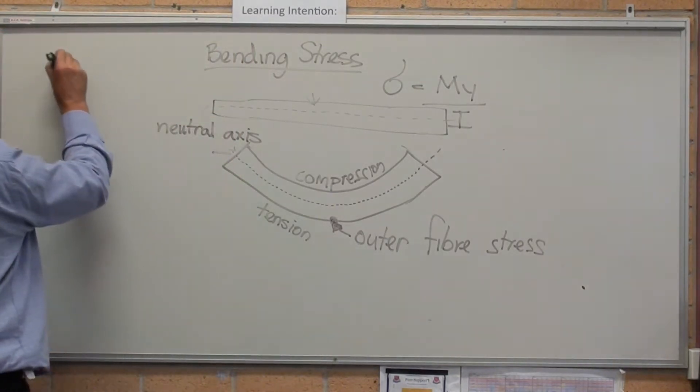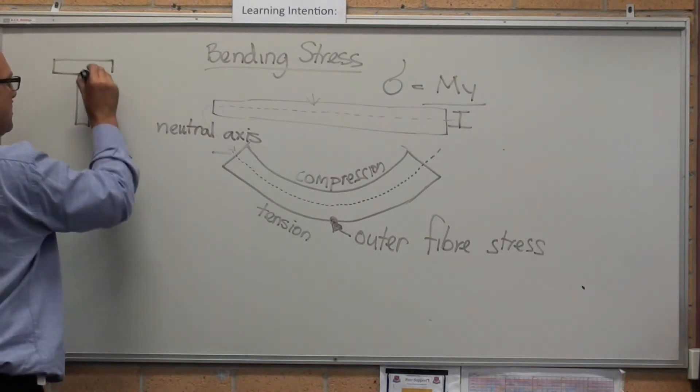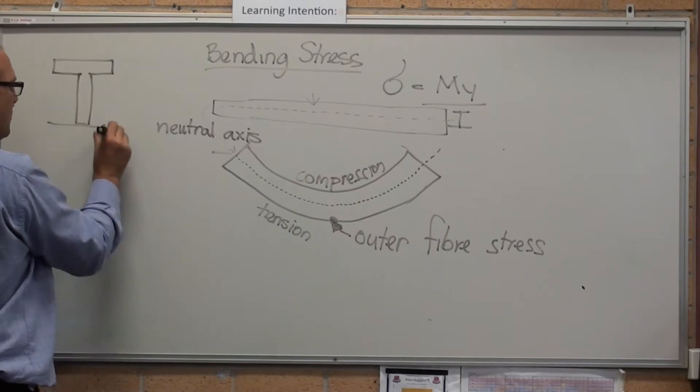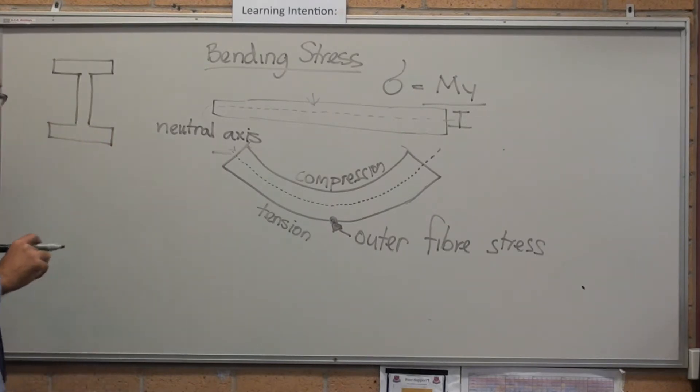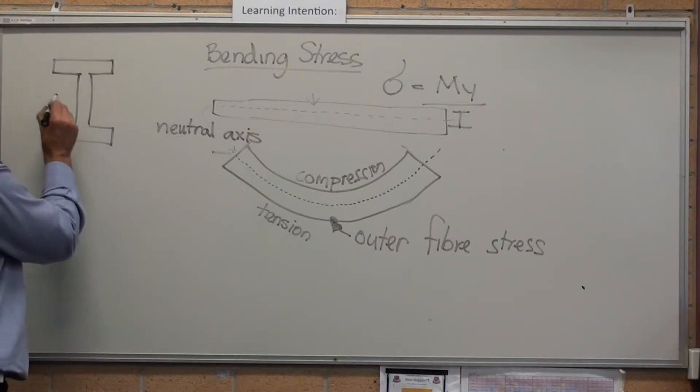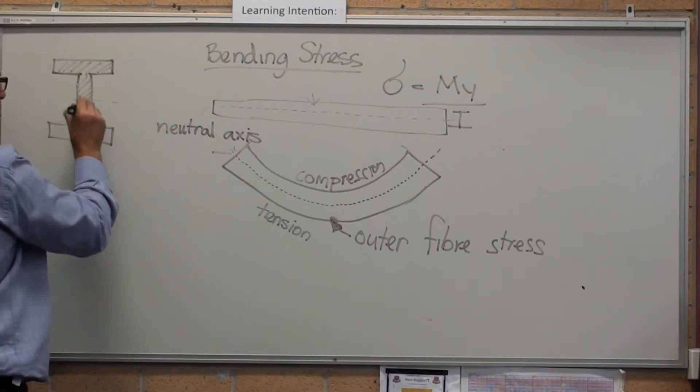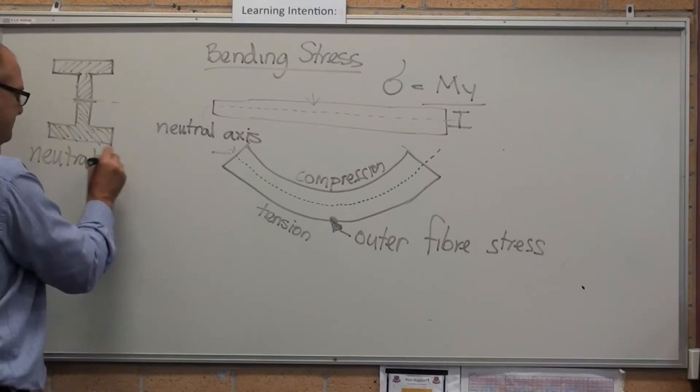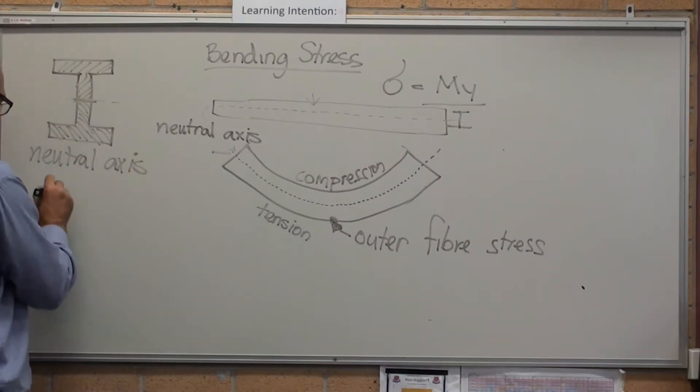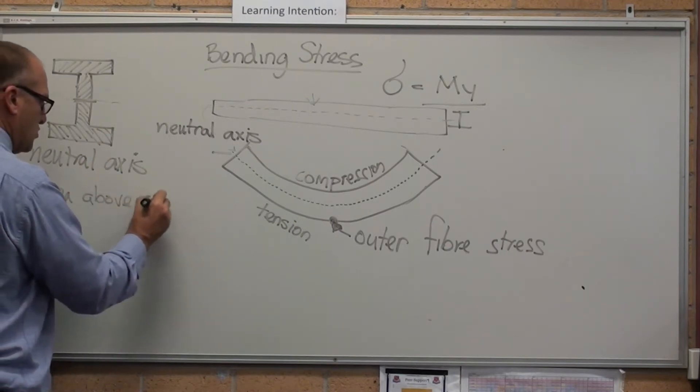How do we calculate the neutral axis? Let's have a look at it end-on. I have got here a simple... let's start with an I-beam. The neutral axis on an I-beam is when the area above equals the area below. That's where the neutral axis is. The neutral axis is the area above equals the area below.